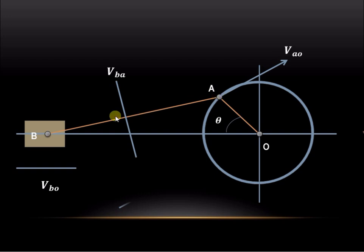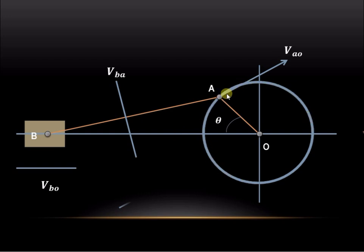In case of the connecting rod AB, neither A is fixed nor B is fixed, so we can find the velocity of B with respect to A or A with respect to B, since both are floating points. B is the piston which slides with respect to a fixed point, so velocity of B with respect to O will be parallel to the path of sliding. For a rotating or oscillating link, velocity is always perpendicular to the link, whereas for the piston — the sliding link — the velocity is parallel to the path of sliding.